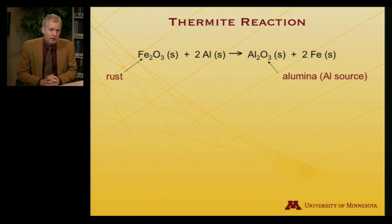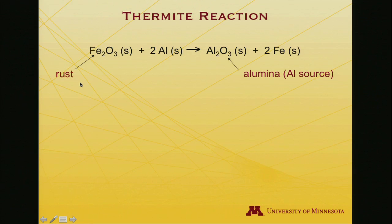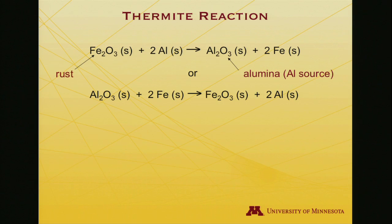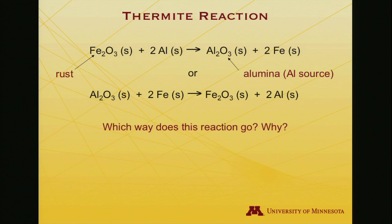Let me return to thermite and show you a balanced chemical equation. I told you we had a little flower pot filled with rust and aluminum powder. I have my balanced equation here: iron oxide — that is rust — and aluminum as a solid. Looking at the products, there's been a transfer of the oxygen atoms from the rust to the aluminum, making alumina, which is actually the mineral from which we extract aluminum on Earth. You might ask yourself, why wouldn't one write it the other way? Why not have the alumina on the left side with solid iron going to iron oxide plus aluminum powder? A key question from a thermodynamic standpoint is: which way does the reaction go, and why?